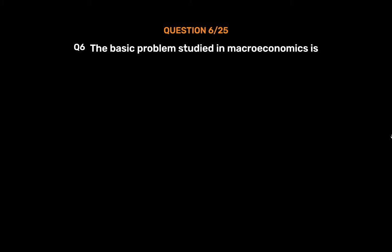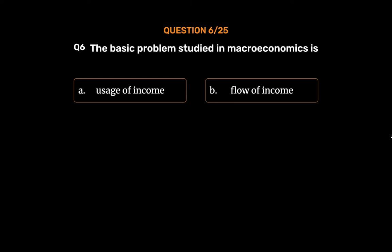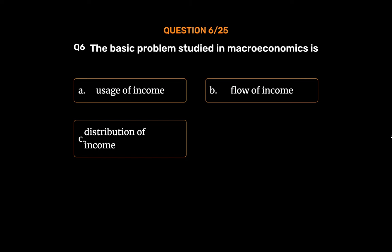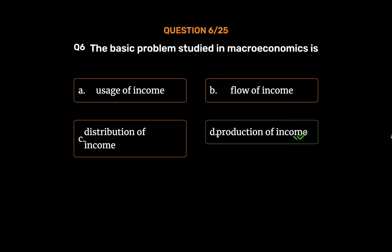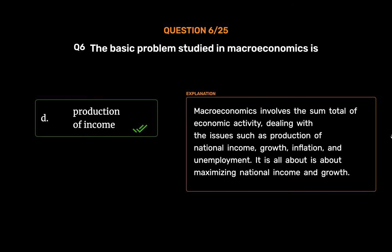Question No. 6: The basic problem studied in macroeconomics is — Option A: Usage of income, Option B: Flow of income, Option C: Distribution of income, Option D: Production of income. The correct answer is Option D, Production of income. Macroeconomics involves the sum total of economic activity, dealing with issues such as production of national income, growth, inflation, and unemployment. It is all about maximizing national income and growth.